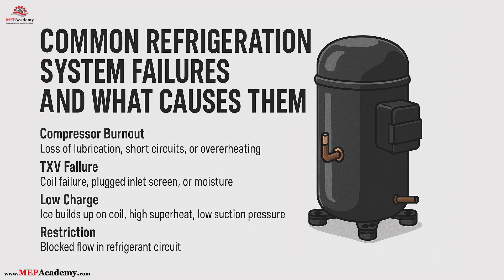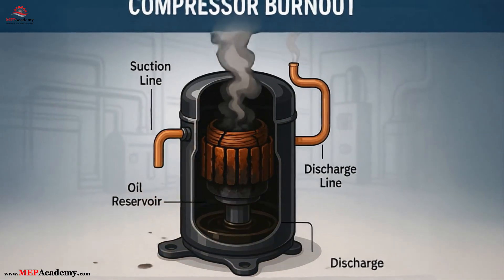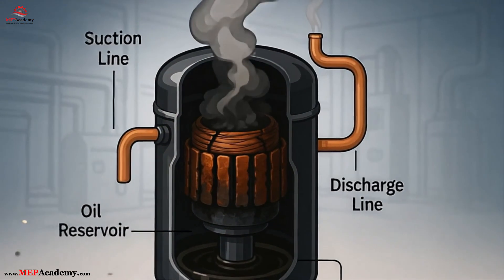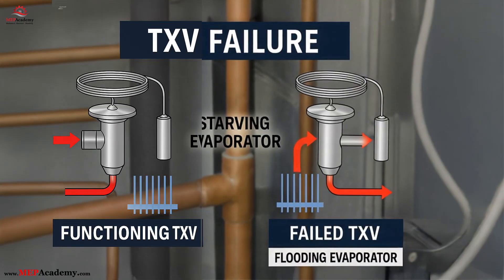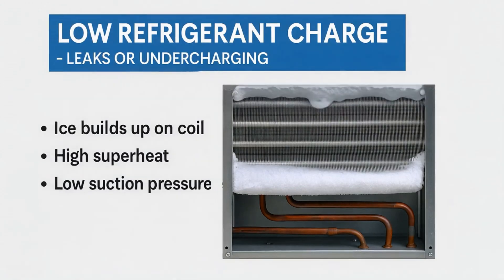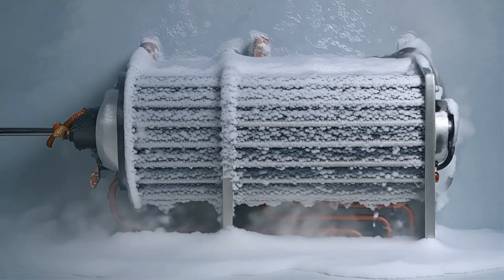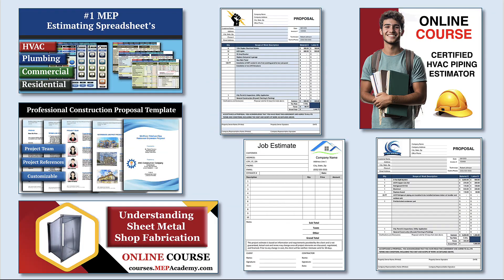Summary: compressor burnout, TXV issues, low charge, restrictions, non-condensibles, and electrical failures are the most common refrigeration system problems. Diagnosing them early can save time, money, and system longevity. Download our free troubleshooting checklist using the link in the description, and don't forget to like, subscribe, and turn on notifications so you never miss a video from MEP Academy.